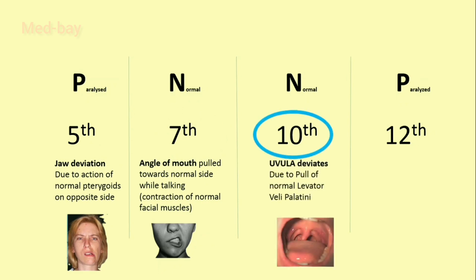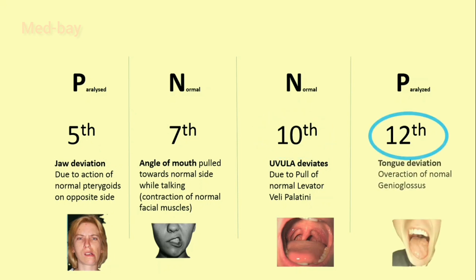In vagal palsy, the uvula deviates towards the normal side due to the action of levator veli palatini. In hypoglossal nerve lesion, the tongue deviates to the paralyzed side due to the overactive normal genioglossus.